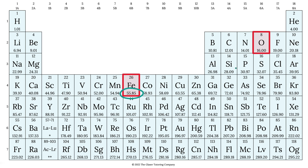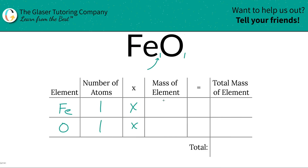Here's iron: 55.85. Here's oxygen: 16. So those are the masses we're going to write down. This is 55.85, and oxygen is 16.